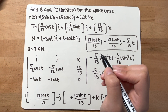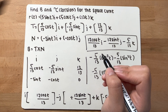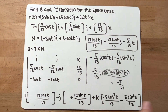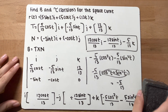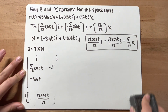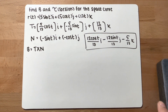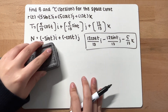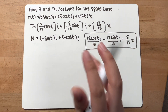Let me just check if this is correct — yes, this is the correct answer. Now, moving on to the next part of this problem, we need to find the torsion. The formula for torsion is as follows.